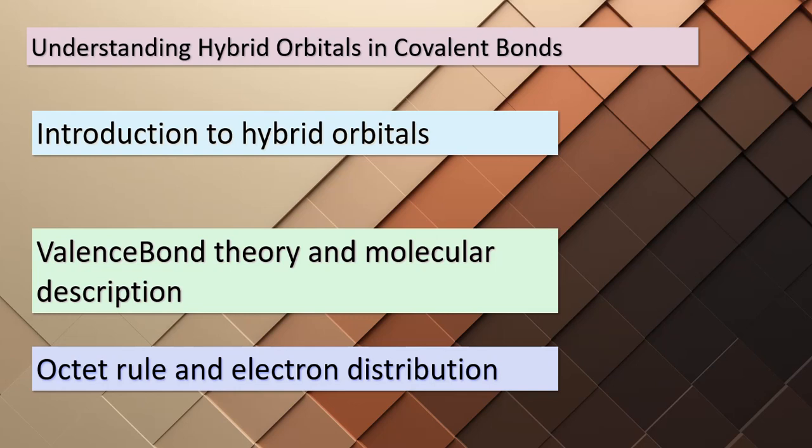Hybrid orbitals particularly come into play when dealing with molecules that have an octet or fewer electrons around the central atom. Their usage ties closely to the molecular geometry forecasted by the VSEPR model. While the concept of hybrid orbitals might not always predict outcomes, it becomes a valuable tool when we already know the electron domain geometry.